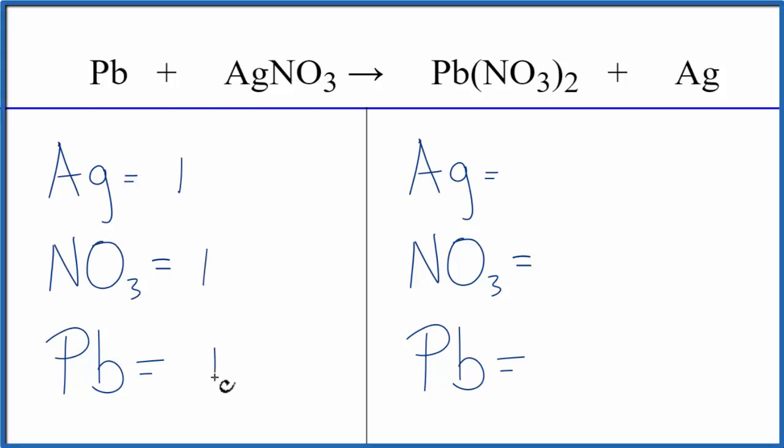And then I have the one lead. On the product side, I have 1 silver, 2 of these nitrates, and then just the 1 lead atom.